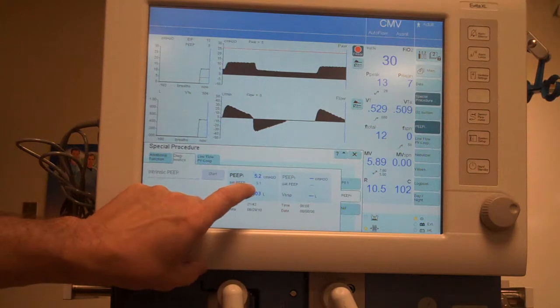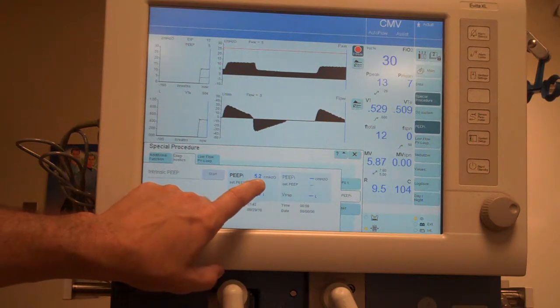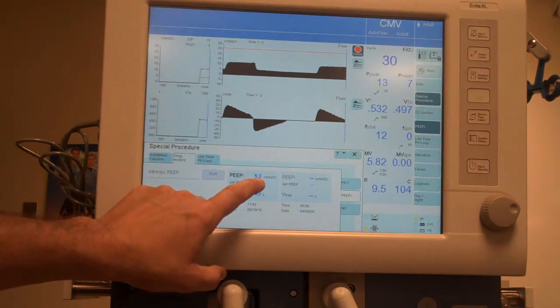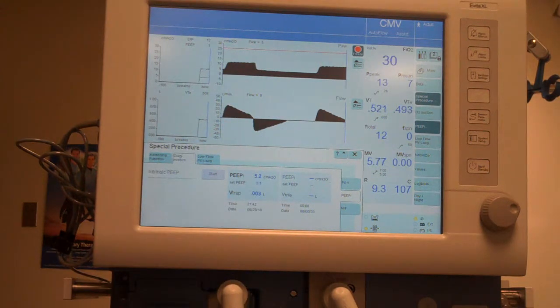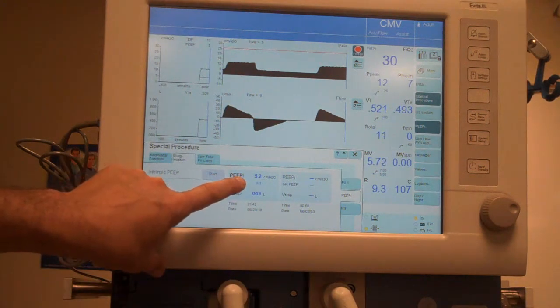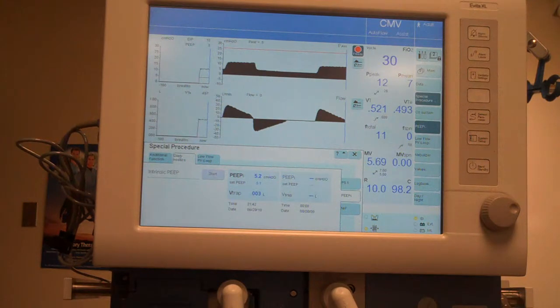In this one, however, it says the set peep is 5.1, the measured total peep is 5.2, so the intrinsic peep is 0.1. Be careful because it does say peep eye when in reality it's the peep total.